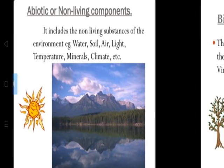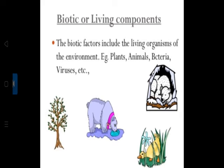Coming to biotic or living components — when I talk about biotic or living components, I am talking about plants, animals, bacteria and viruses. Under biotic or living components, there are autotrophic components, heterotrophic components, producers, consumers and decomposers. We will be talking about each one of them.